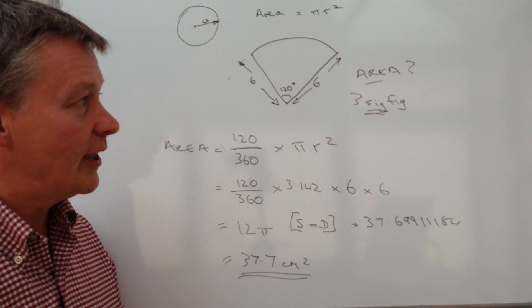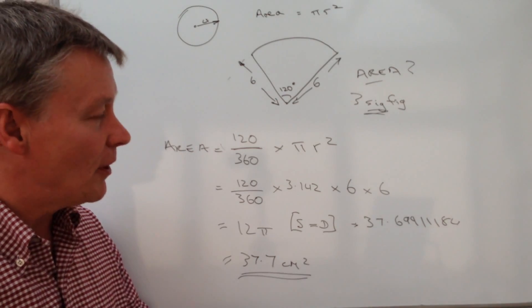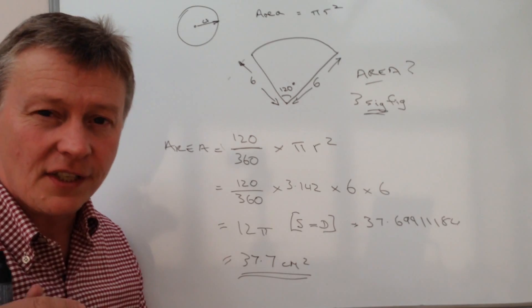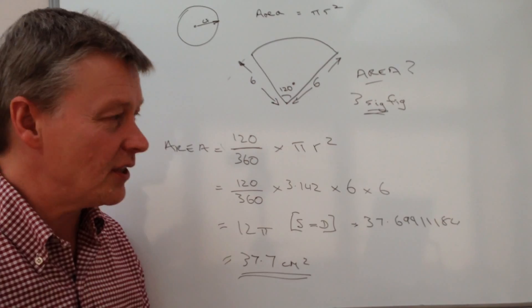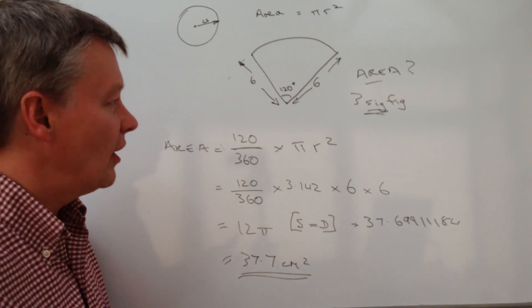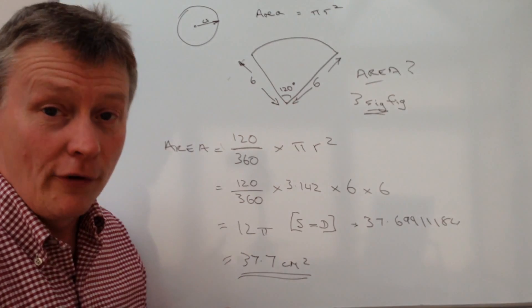So the full answer to this particular question is 37.7 centimeters squared. I hope that's helpful to you. It is one of the first videos on this particular playlist. I'm also going to post a few more examples. It is round about a star grade at GCSE or high school math.